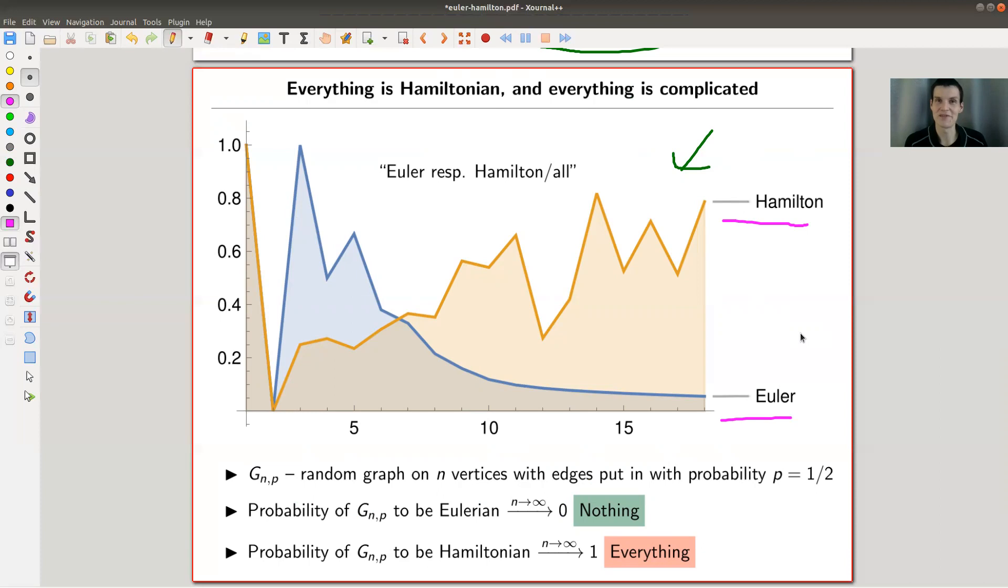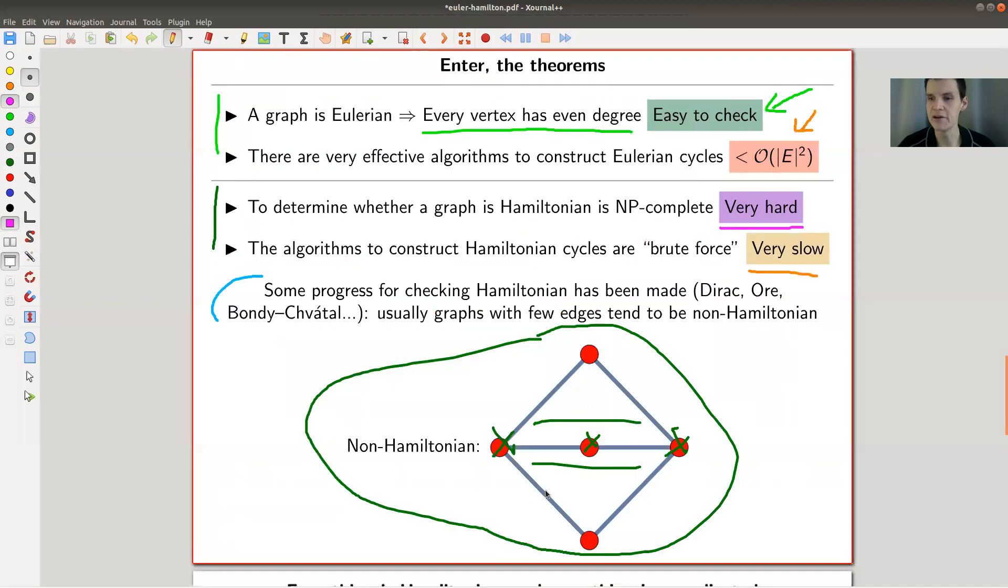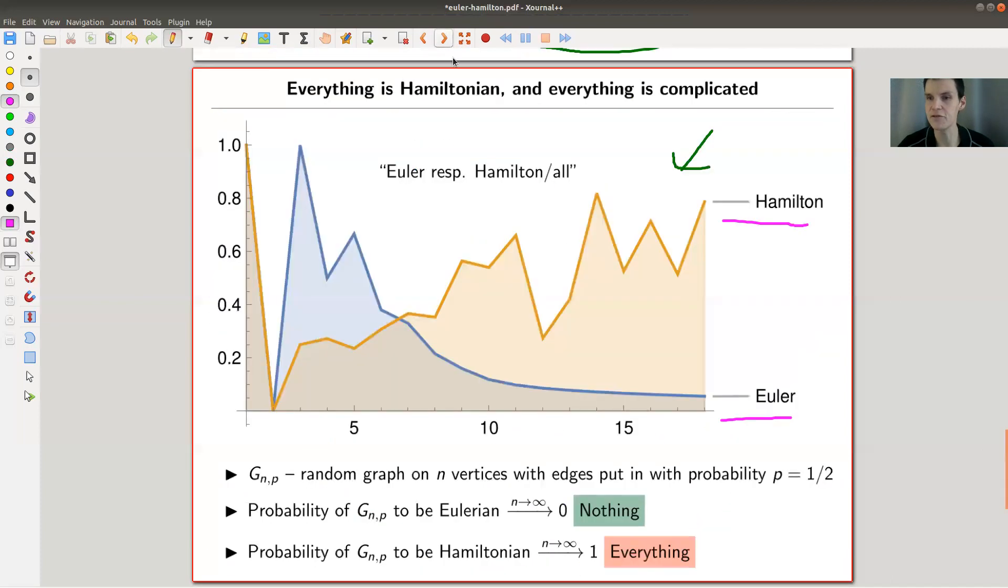But it makes a bit more sense if I formulate it like this. Most graphs, it's just super easy to check whether they're Hamiltonian. It's only a very tiny class of graphs where it's just very hard. Just because the problem in general is very hard doesn't mean there aren't certain nice subclasses where you can actually check everything very easily. You're only talking about a very tiny class of graphs, so why should you worry?